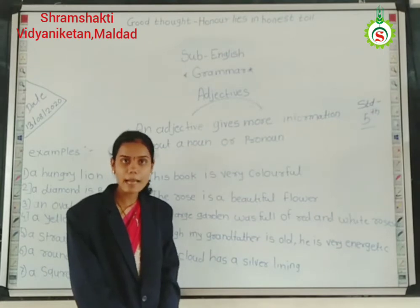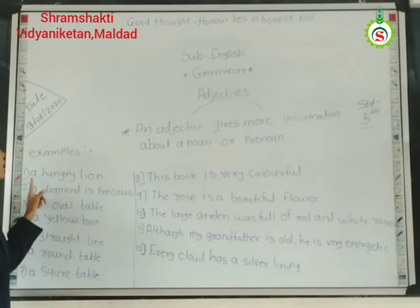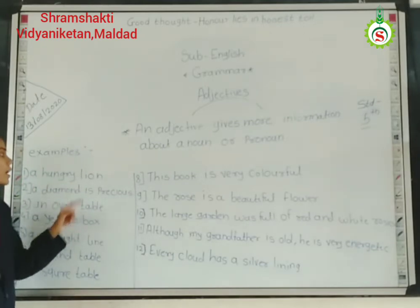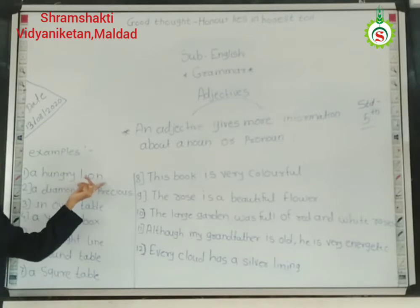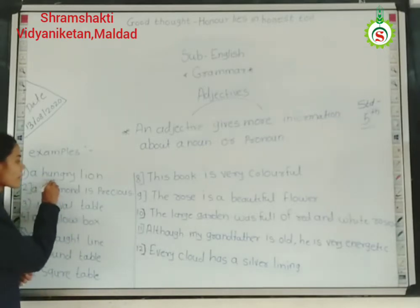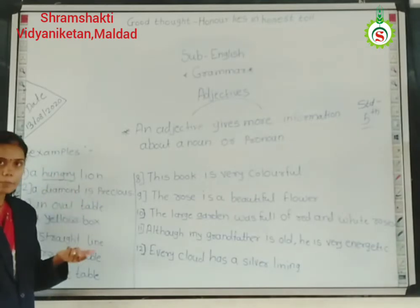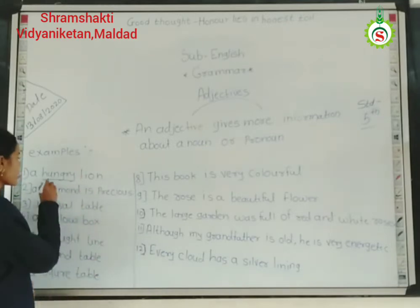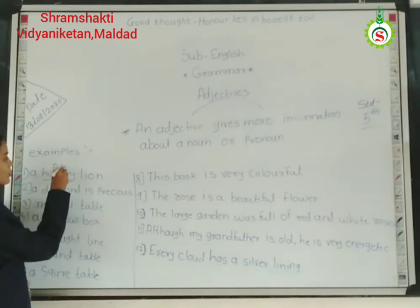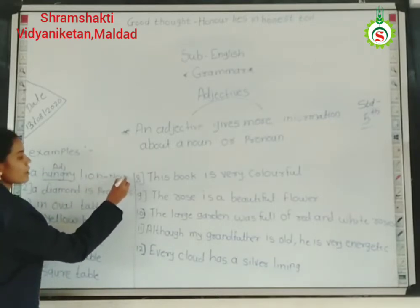Now we see some examples of adjectives. The first example is 'a hungry lion.' You know that lion is a noun. So how is the lion? The lion is hungry. The word 'hungry' gives more information about lion, which is a noun. So hungry is the adjective and lion is the noun.